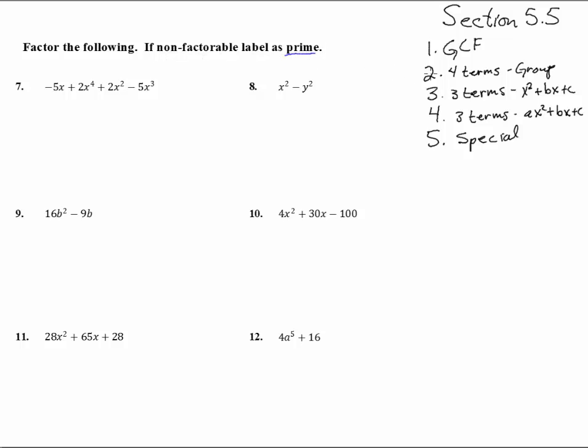Can't factor them. So we're going to keep all five of these methods handy here. Okay, number 7. I don't like how that's written. I kind of like the descending order just so we can see what's going on. So we're going to write 2x to the 4th and then minus 5x cubed plus 2x squared and then minus the 5x. There, I can kind of see what's going on.